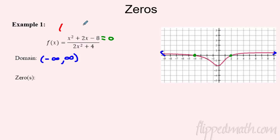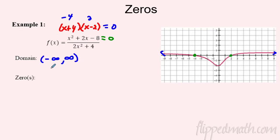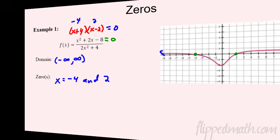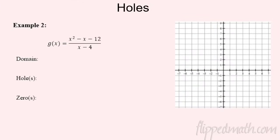We do a little factoring: what multiplies to negative 8 and adds or subtracts correctly? That's (x + 4)(x - 2). So x = 2 or x = -4 makes the top zero. Our zeros are at negative four and two — and that matches the graph. There they are: negative four and two.